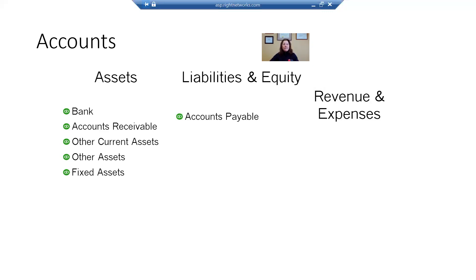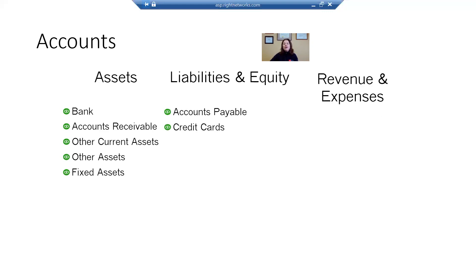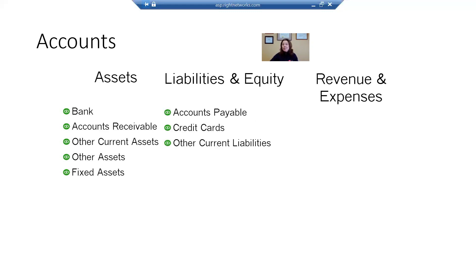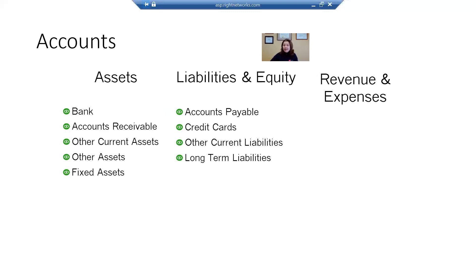Then we have the payable section, the liability section. The first account is accounts payable, and this is open bills to vendors, people you owe money to. Then we have credit cards — very simple, credit cards. Then other current liabilities — again, less than one year — sales taxes, meals taxes, a line of credit, that's a demand note, and payroll liabilities.